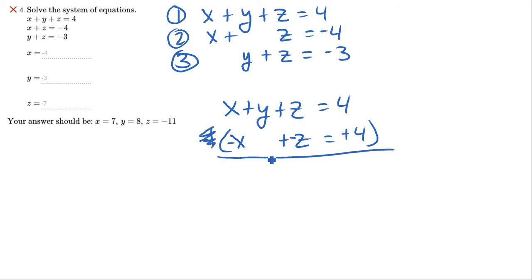Now, let's just add those two equations together. Watch what happens. X minus X goes away. Y plus nothing. Z minus Z. 4 plus 4. Hey, just like that, I know that Y equals 8. Now, once I know one of the variables, I'm in business, right?